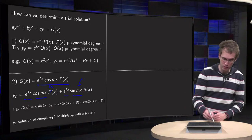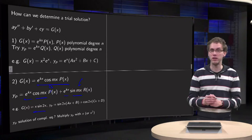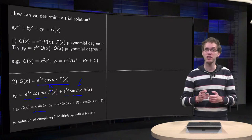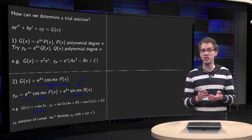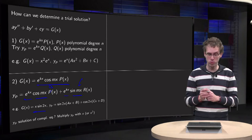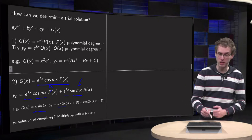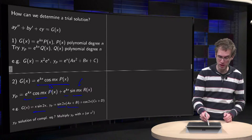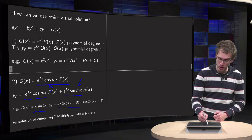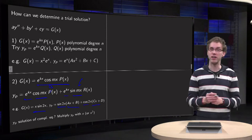For example, if your g of x would be x times sine 2x, what would you do in that case? Well, your e to the power kx isn't there, so your k is basically zero. So your particular solution would be sine 2x times a polynomial of order 1, so a general polynomial of order 1, Ax plus B, plus also include the cosine terms with Cx plus D.